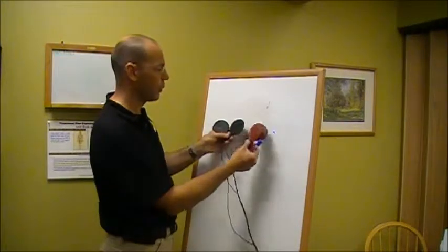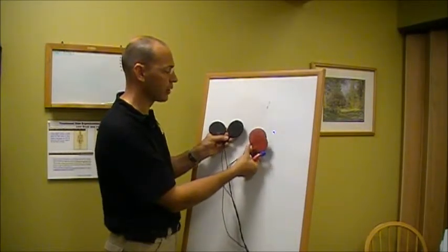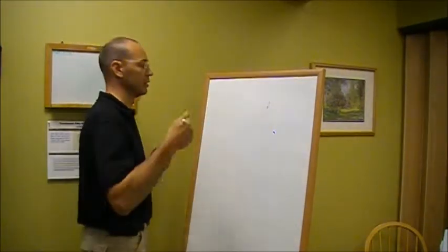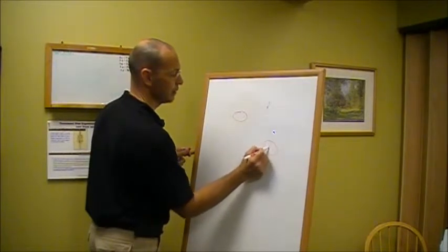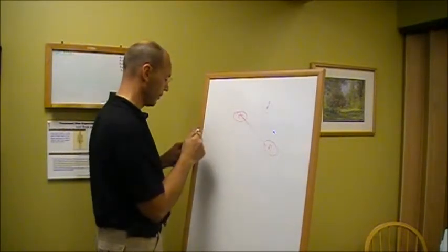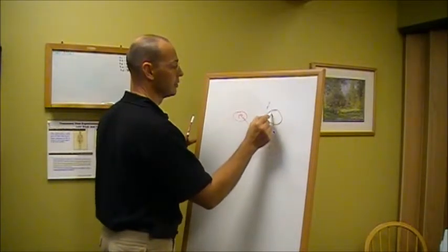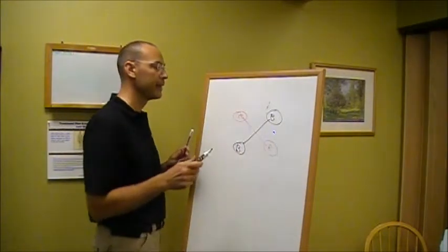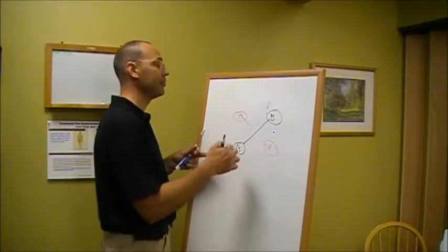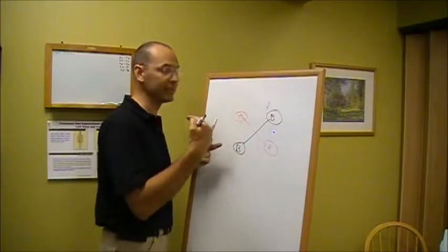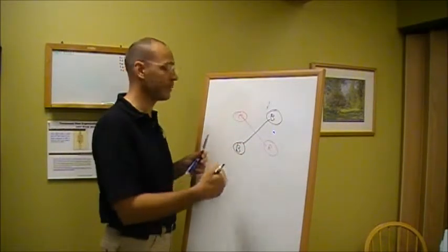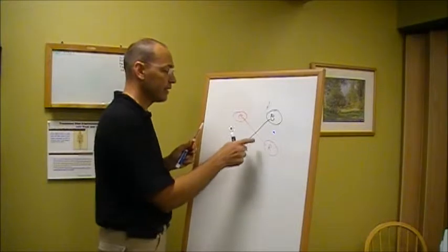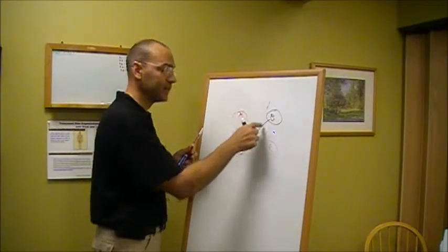When we set up an injury with interferential current, we put four pads around the problem. Using red pad to red pad will draw a current, and then black pad to black pad will draw another current. People will often tell us their problem isn't underneath those pads, but what we're looking to do is surround the area with the pads. In fact, the effect we're looking for takes place in between the four pads.